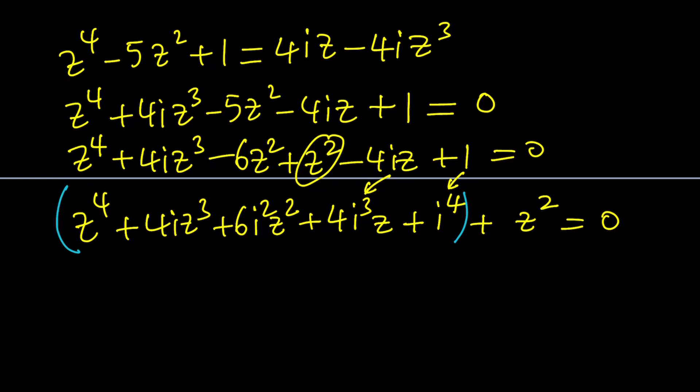So we're talking about binomial coefficients here. We can basically write this as z plus i to the fourth power plus z squared equals 0. This is not the end of it, this is just the beginning of the story. But here's the hardest part to overcome.